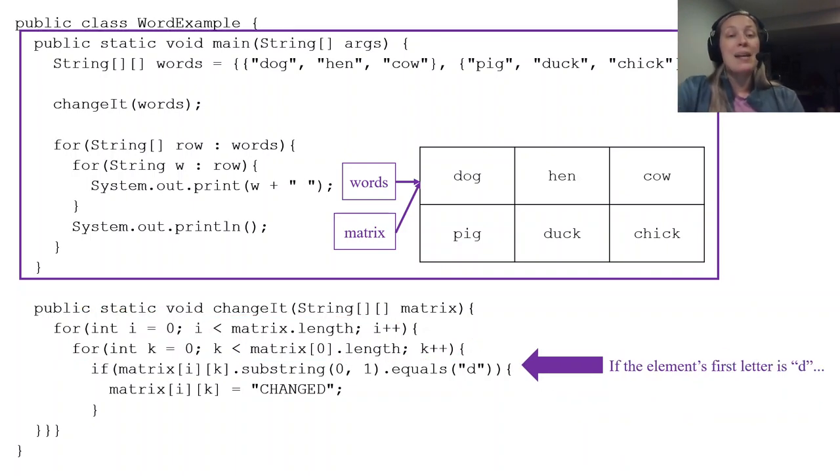And I'm asking a question at every element. I'm saying is the current element [i][k], is the substring(0,1)—so remember substring(0,1) represents the first letter of your string—if it equals "D"? So I'm asking the question, is the element's first letter D? And if it is, what am I going to do?